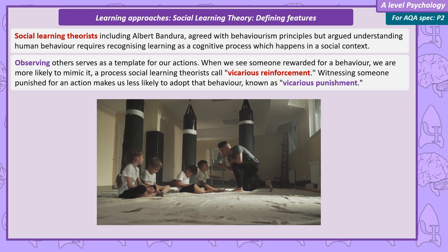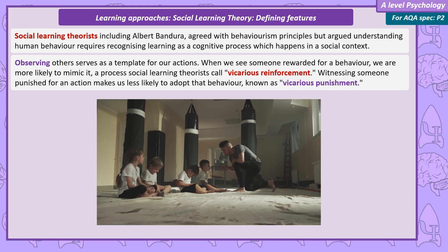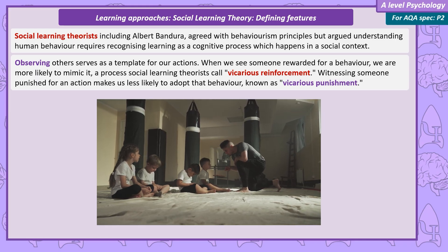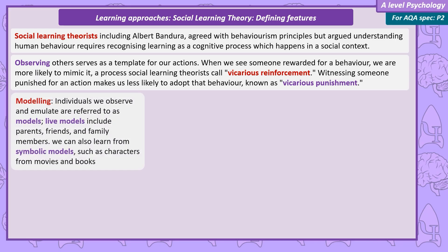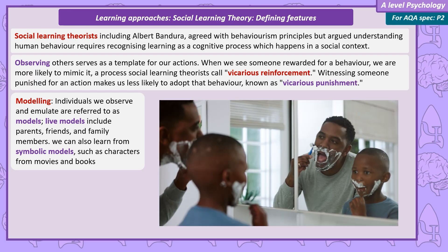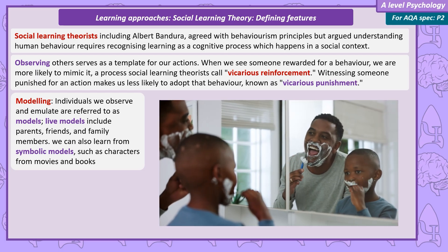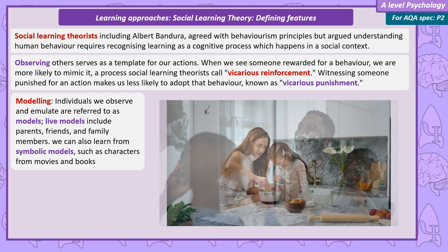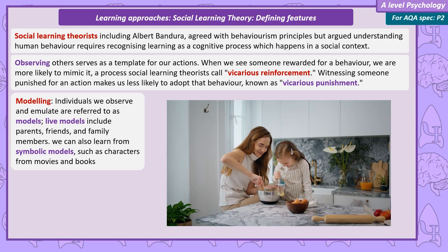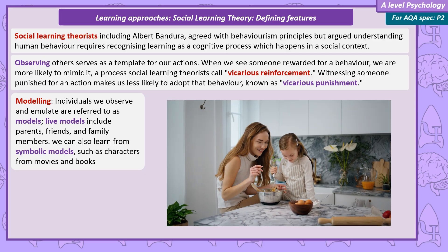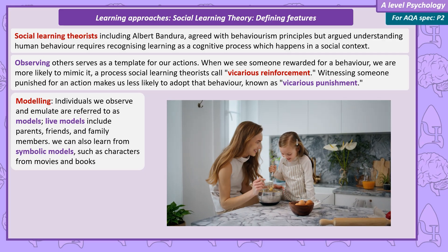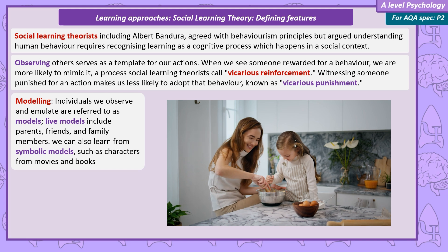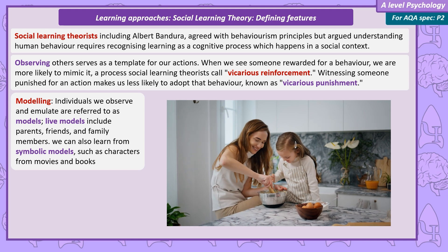There's also vicarious punishment. If we observe someone being punished for their behavior, then we're less likely to imitate that behavior. The people we observe are called models, and they can include parents, friends, and family members. These are examples of live models — people we know personally. We can also imitate symbolic models. This is when we see behavior modeled in the media, like characters from movies and books.